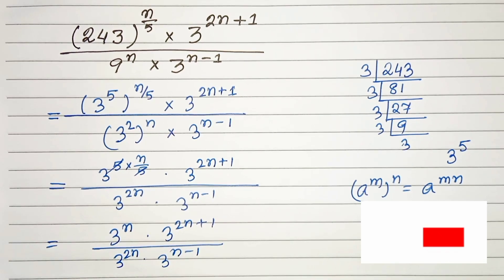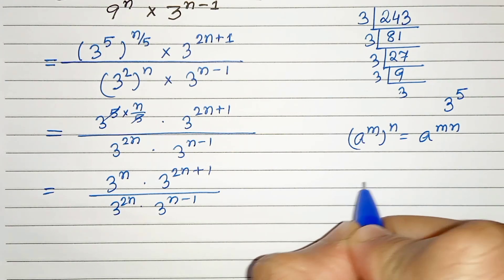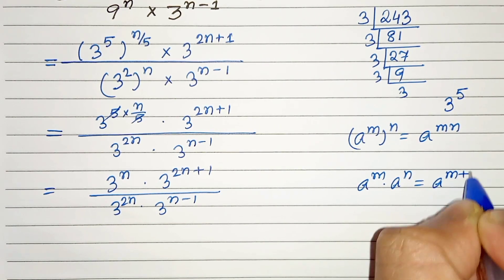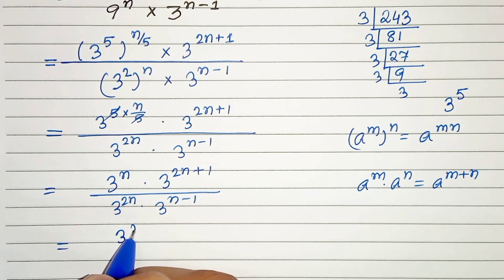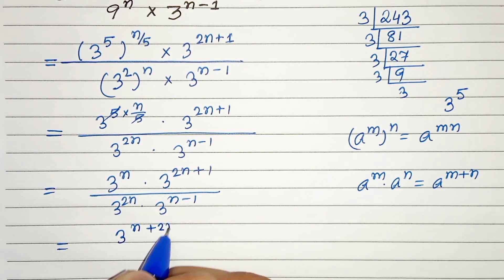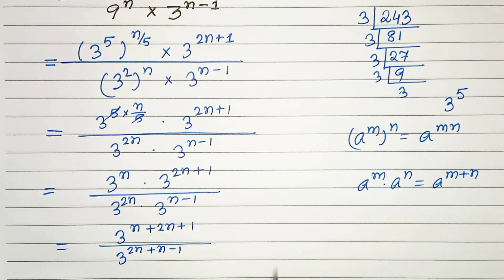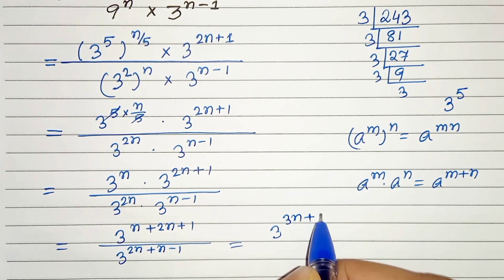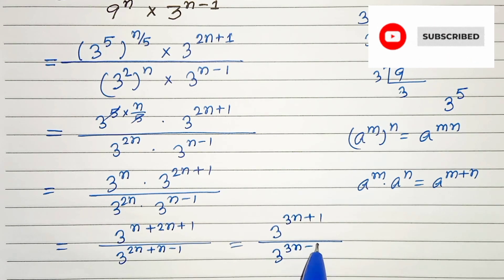Again, we will apply the exponential property: a to the power m times a to the power n can be written as a raised to the power m plus n. Applying this, we get 3 to the power n plus 2n plus 1 in the numerator, and 3 to the power 2n plus n minus 1 in the denominator. In the next step, n plus 2n is 3n plus 1, divided by 3 to the power 3n minus 1.